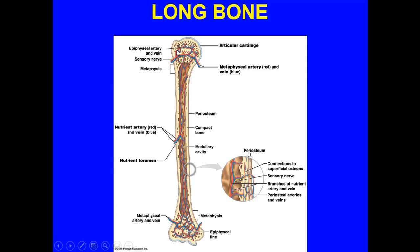Growth stops somewhere between roughly 16 through 21, with a rough average of about 18. This is also how you can tell whether an individual is still an adolescent or an adult. The periosteum has connections from blood vessels with the superficial osteons, the sensory nerves, and branches of the nutrient artery and vein. The periosteal arteries and veins run through here.